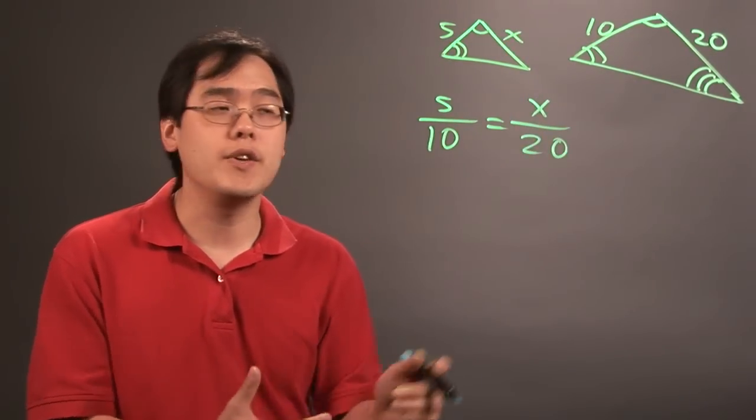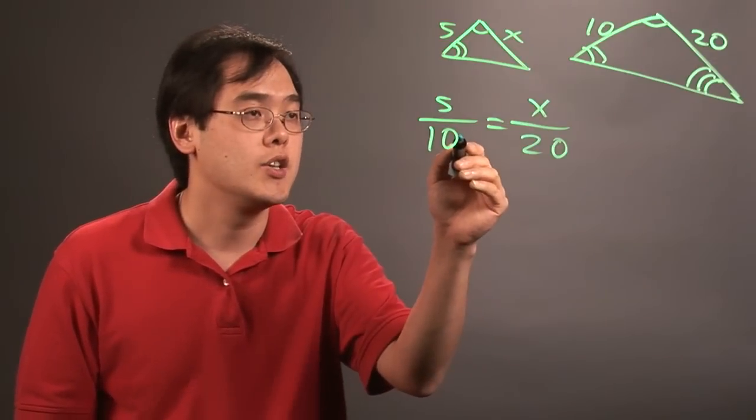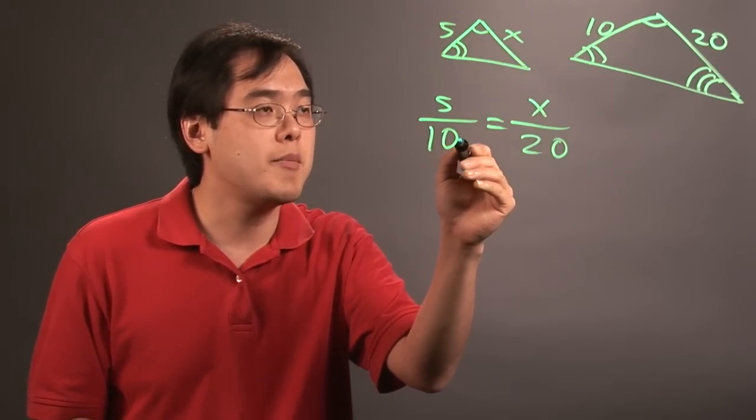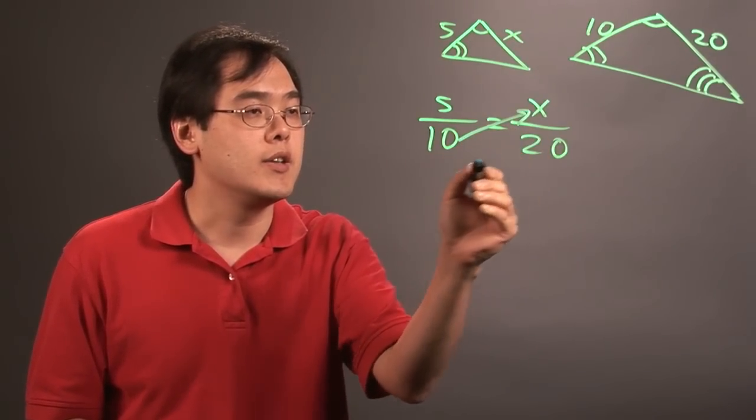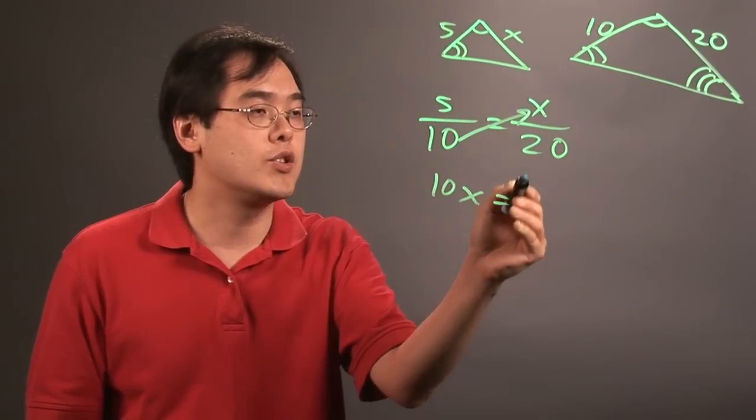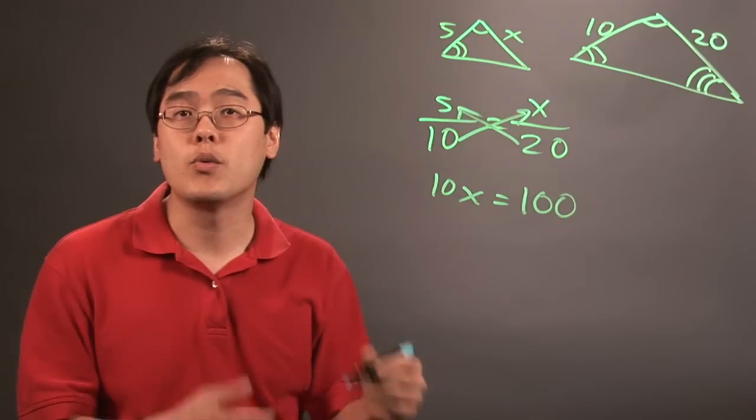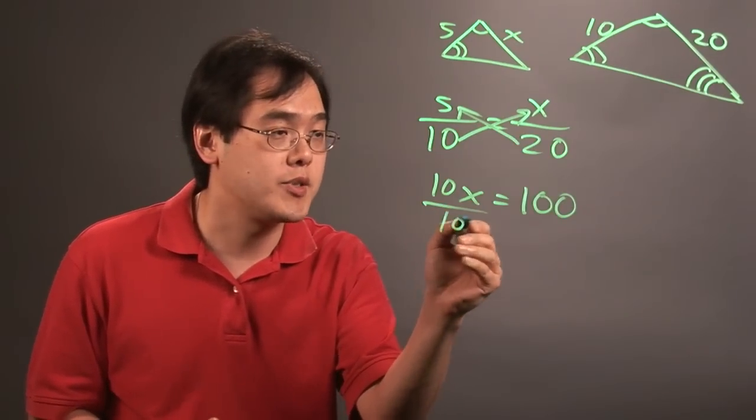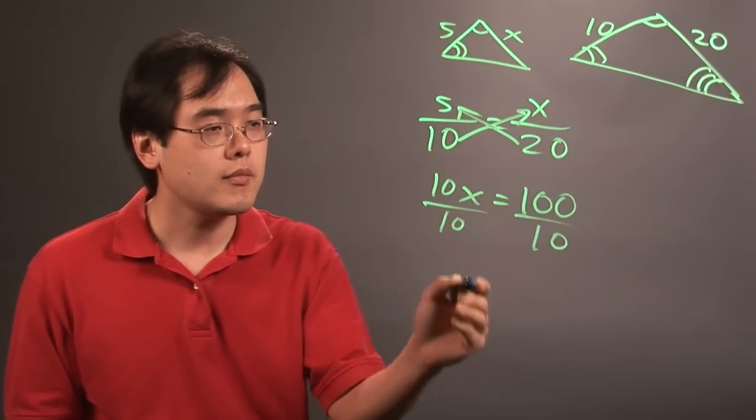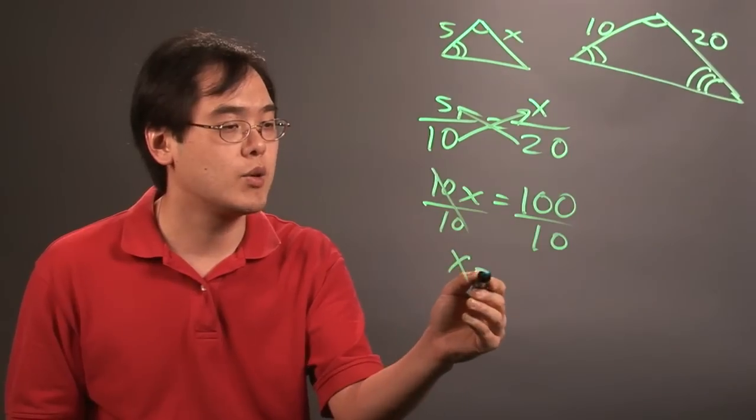And what you want to think about then is, to solve it, you want to use cross multiplication. So the denominator multiplied by the numerator, so this will be 10x equal to, and then 20 times 5 is going to be 100, and then you want to solve for x, and that's dividing both sides by 10, and the 10s will cancel, so x is equal to 10.